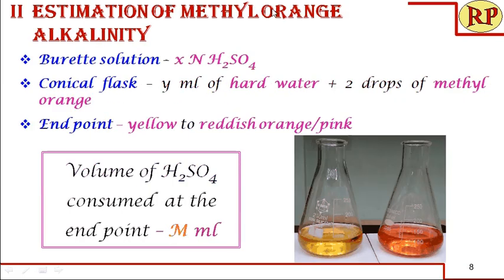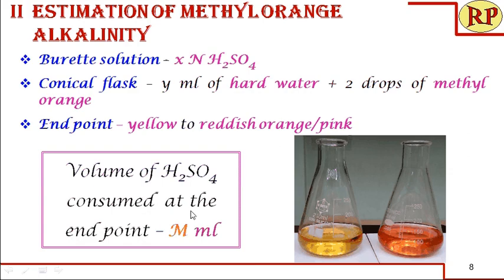Similarly for methyl orange: we can add methyl orange in the beginning, or after determining the phenolphthalein endpoint, add methyl orange to the same solution and continue the titration. The endpoint color change is yellow to reddish orange — if alkalinity is present it will be yellow, and at the endpoint it changes to reddish orange. We note the volume of sulfuric acid consumed at this endpoint as M ml.